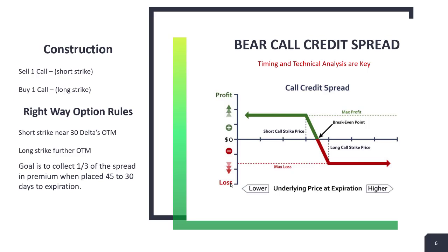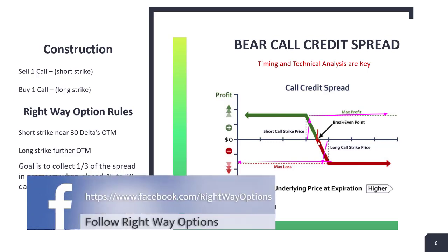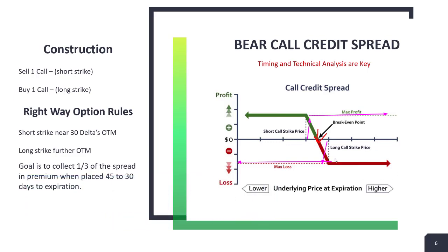The construction uses call options rather than put options. You sell one short strike call and buy one long strike call. Maximum profit is the premium received; maximum loss is below that level. Your break-even is not truly centered — on a one-dollar-wide spread where you collected 33 cents, your break-even is when price crosses down below 33 cents, so you actually have bigger risk on the downside. Once again, we're trying to sell the short strike near 30 deltas out of the money, with the long strike a bit further out.